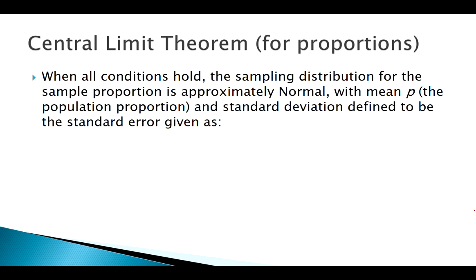If our conditions hold, regardless of the distribution we're sampling from, we can assume the sampling distribution of the sample proportion is normal, centered at p with standard error, this quantity.